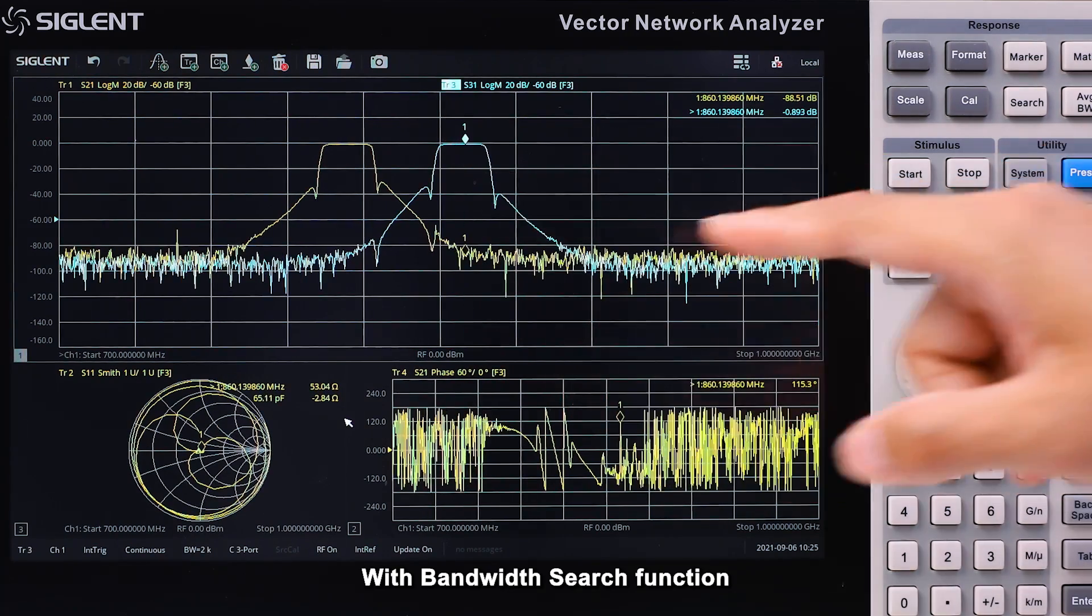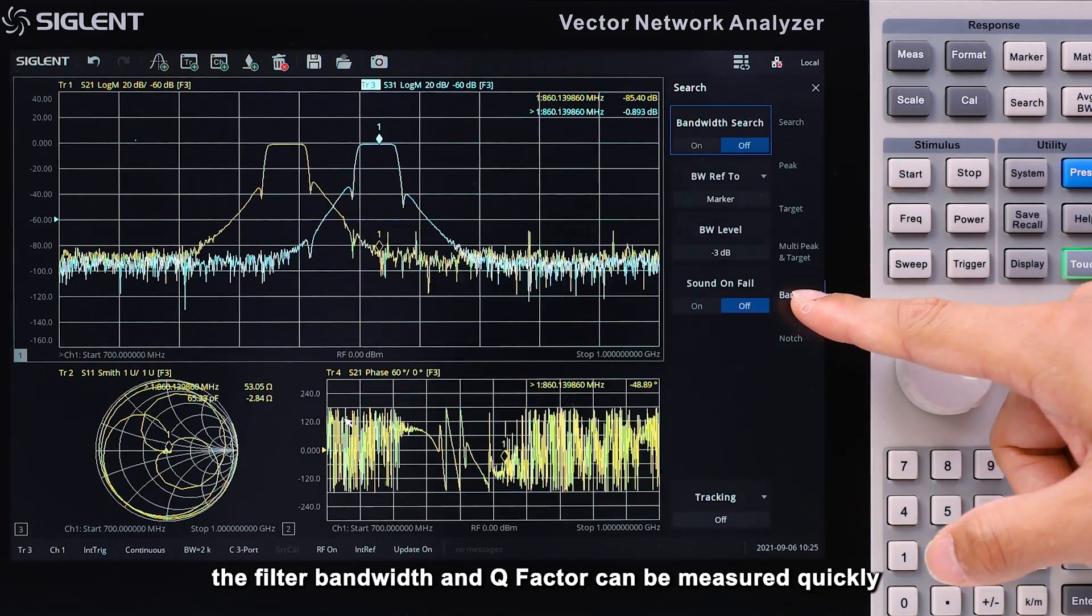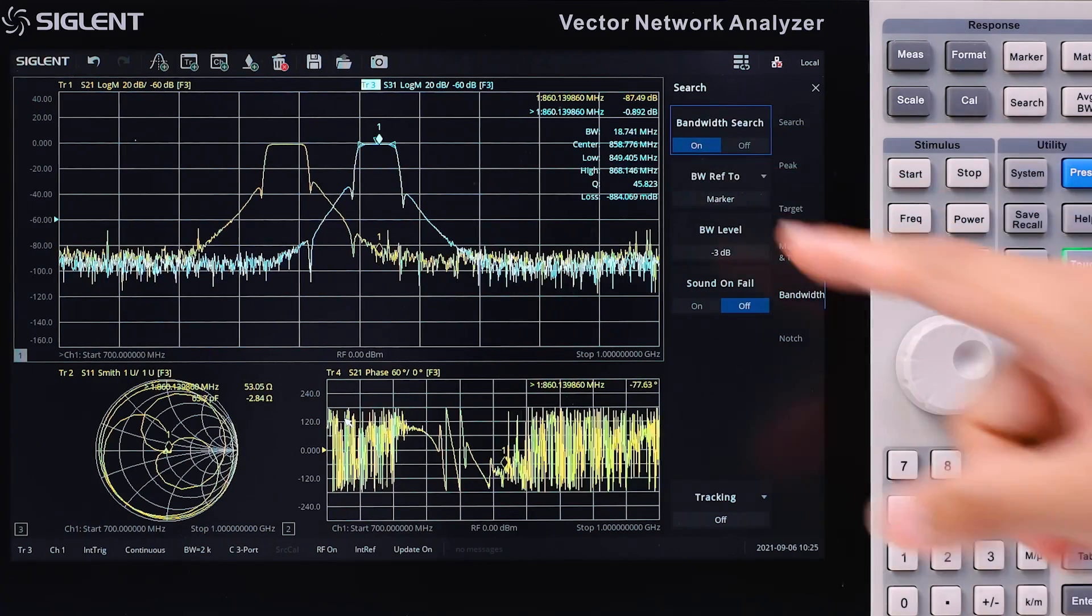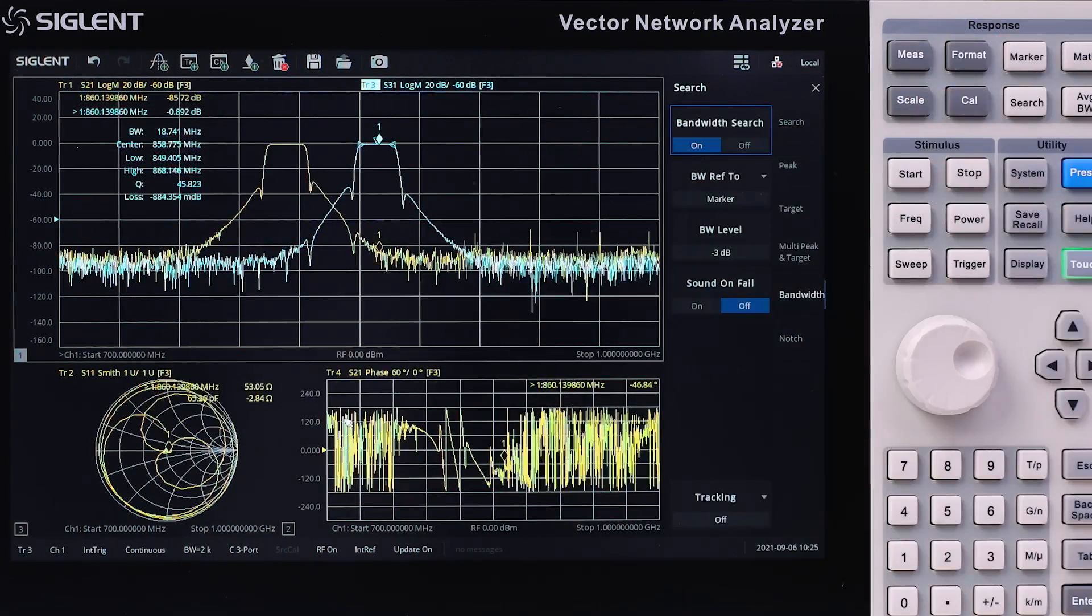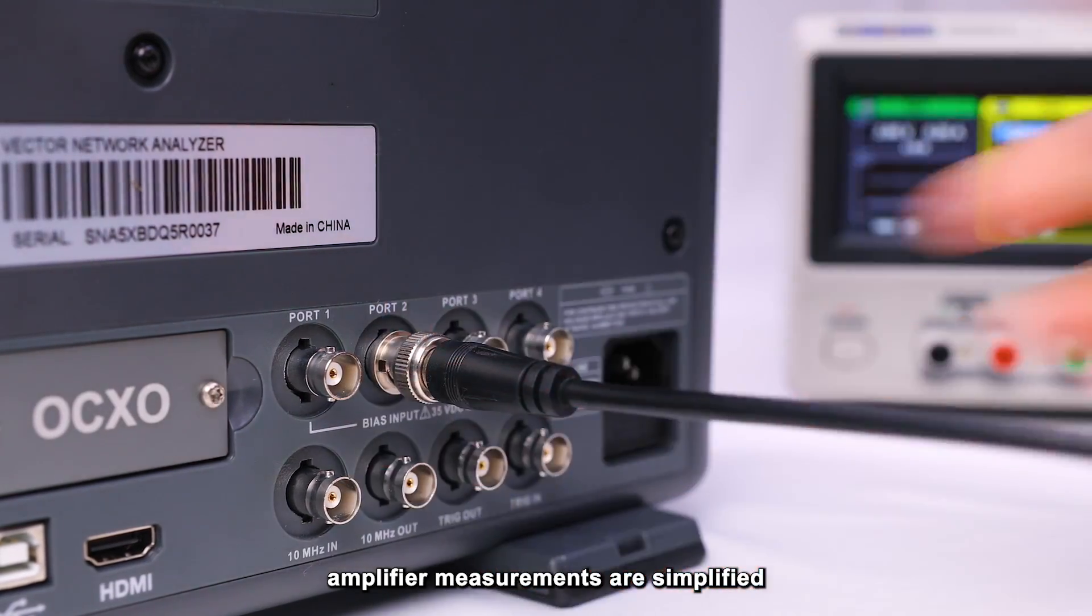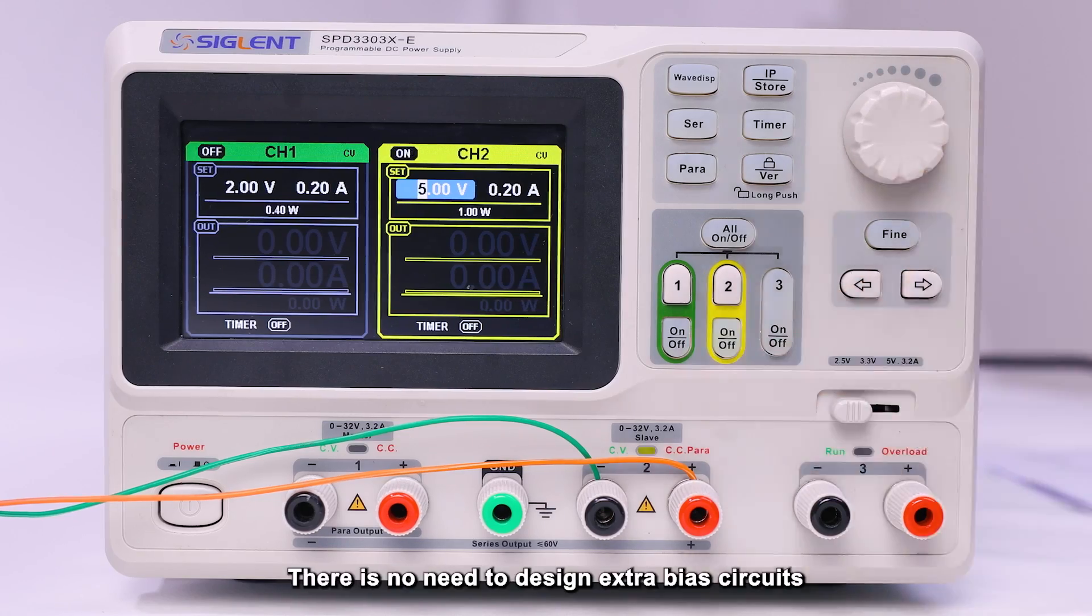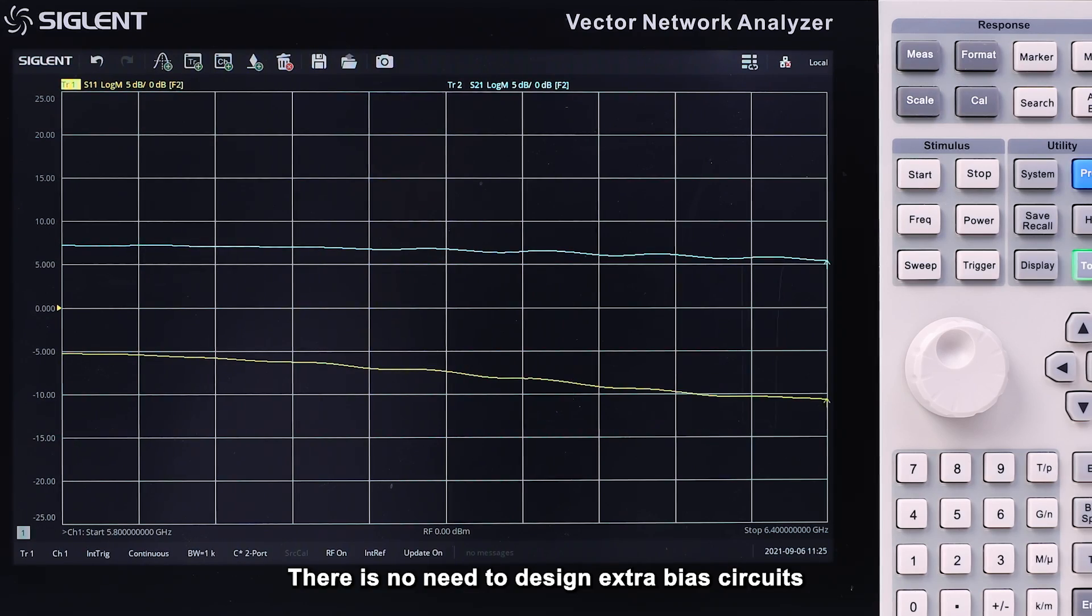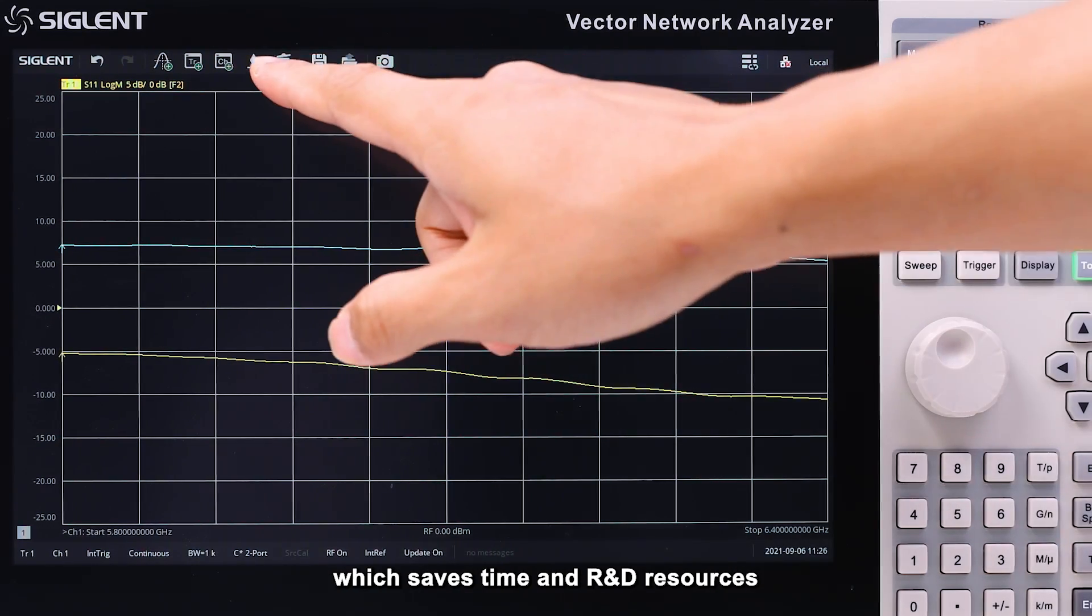With the bandwidth search function, the filter bandwidth and Q factor can be measured quickly. With the standard installed DC bias tees, amplifier measurements are simplified. There is no need to design extra bias circuits, which saves time and R&D resources.